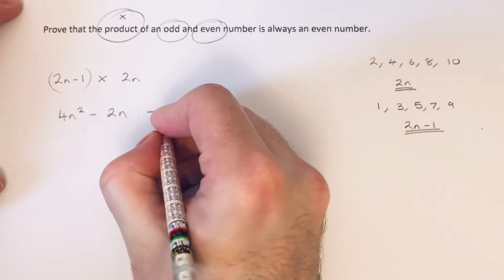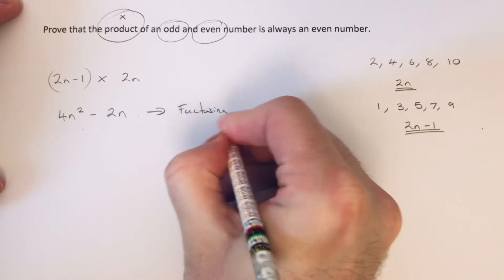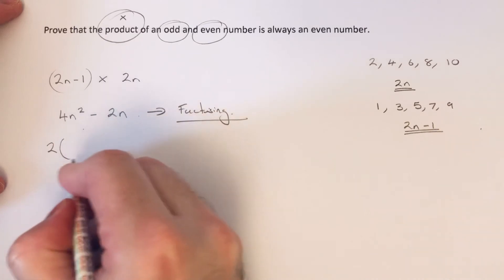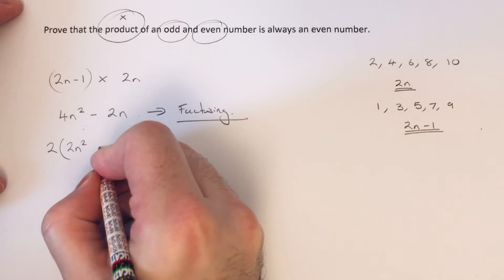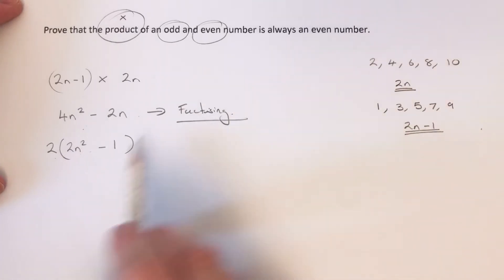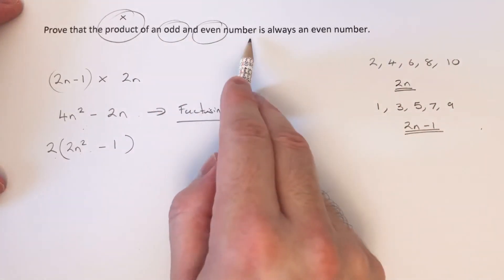We can do this by factorizing this expression. We just need to take the 2 out, so we put the 2 at the start of the bracket and inside the bracket we write 2n squared minus 1. This shows that we have a multiple of 2, hence we've proved that the product of an odd and an even number is always an even number.